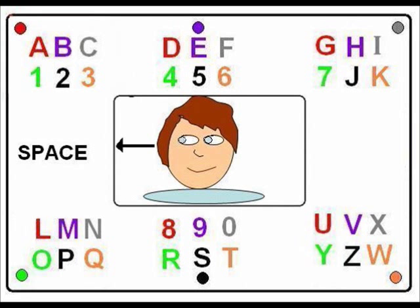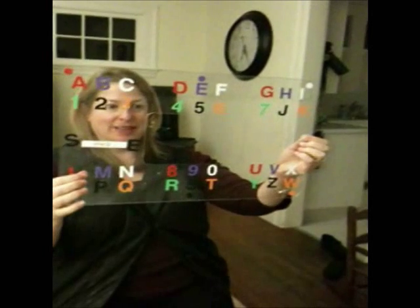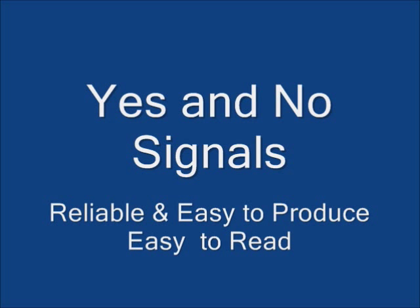To indicate a space, the user simply gazes at the word 'space.' As soon as a partner calls out the correct selection, the user goes on to the next target. If the partner makes a mistake, the nonverbal user must have a way to indicate this. The user in this video uses a deliberate eye blink to indicate no. For yes, he uses a wink. Nonverbal users should select one signal for yes and one for no. These signals must be reliable and easy to produce, as well as easy for the communication partner to read.